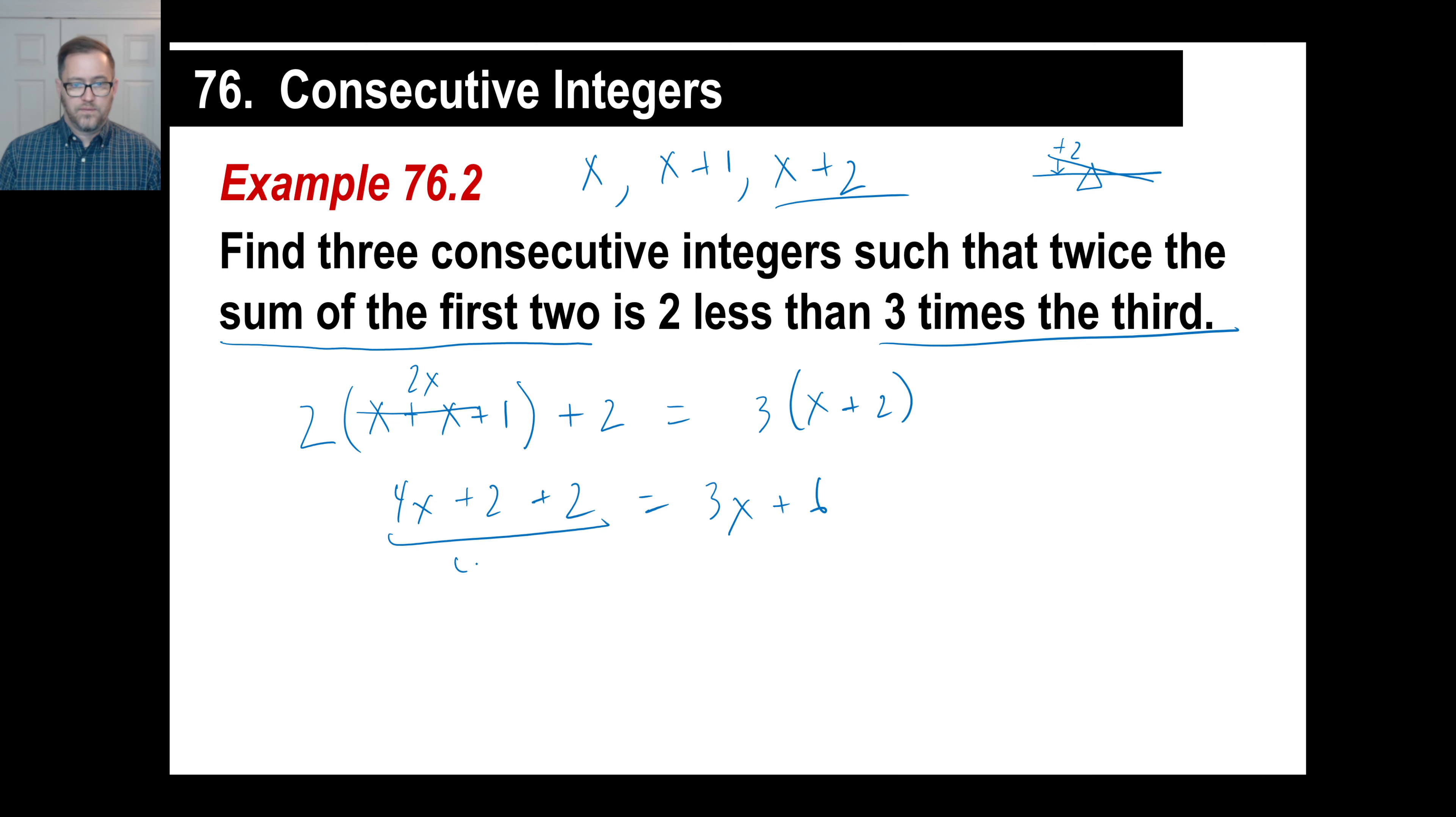So, we've got 4x plus 4 is 3x plus 6. I'm going to move this 3x over. That turns into x. I'm moving the 4 over. That turns into 6 minus 4, which is 2. So, my three consecutive integers would be 2, 3, and 4. And there we go.